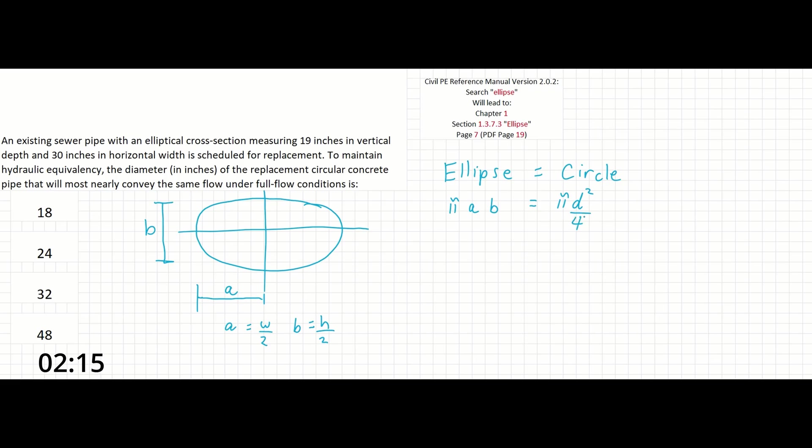Substituting these terms, we can see a is going to be w over 2 and b is going to be h over 2, and that's still going to be equal to πd² over 4.